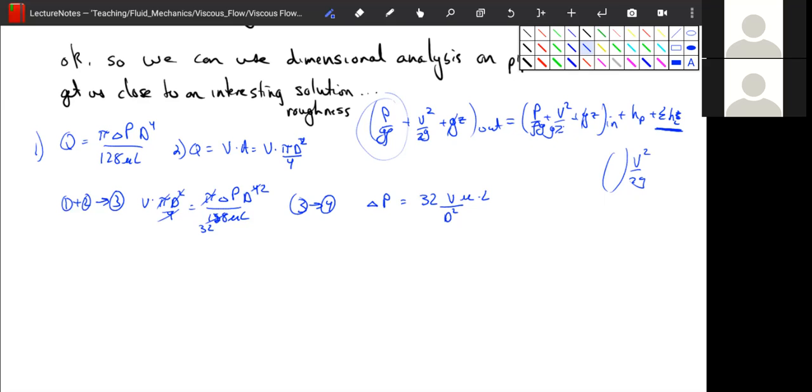So in order to get this into something more akin to what we're used to, we're going to divide both sides by 1 half rho v squared.